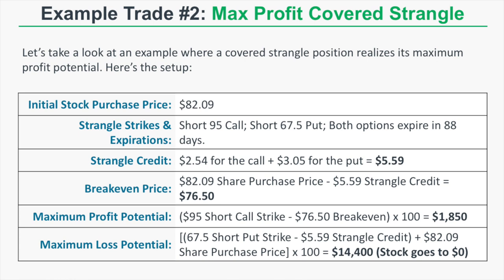The break-even price is $82.09 minus $5.59, equaling $76.50. The maximum profit is the $95 short call strike minus the $76.50 effective purchase price, times 100, giving $1,850. The maximum loss is the $67.50 short put strike minus the $5.59 strangle credit plus the $82.09 share purchase price, times 100, giving $14,400 — occurring only if the stock goes to $0.